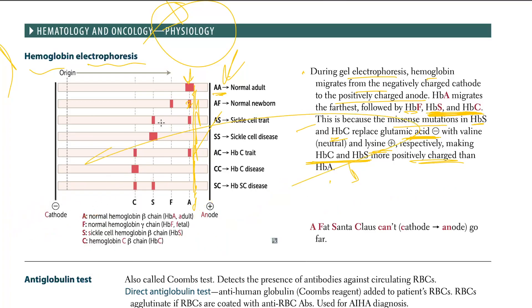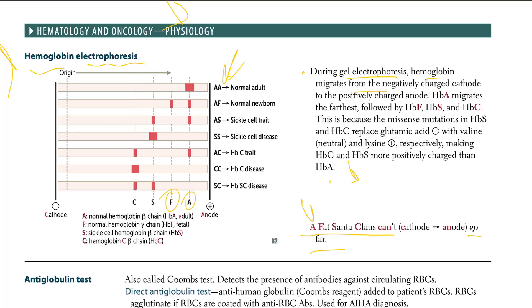That's just the general electrophoresis. Now, the mnemonic is: 'A Fat Santa Claus can't go far' — from the cathode. So: A is HbA, Fanta is HbF, Santa is HbS, and Claus can't go far is HbC. That gives you the first, second, third, and fourth positions.